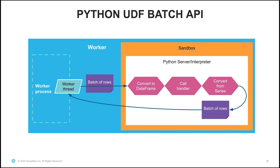Let's take a look at how the batch API works behind the scenes. Similar to scalar UDF execution, we send batches of rows from the worker process to the Python UDF server. In this case, however, we convert to a pandas DataFrame and then call your handler method with it. We take the result and convert from a Series back into a batch of rows and then send that back to the worker process for further processing.